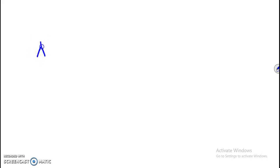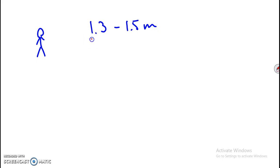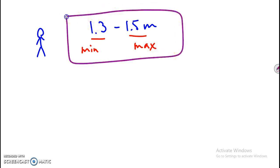We are going to look at a problem involving slope uncertainty. If I go to the doctor and they say that my height is between 1.3 and 1.5 meters, well 1.3 is the minimum value my height could be and 1.5 is the maximum value. So there's some range of values within which my height lies.